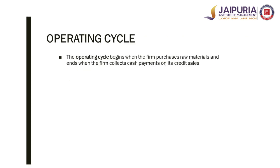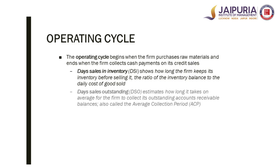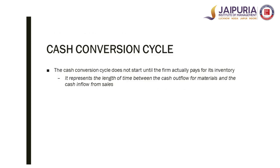Coming on technically, we define the operating cycle using key metrics. Days Sales Inventory (DSI) shows how long the firm keeps its inventory before selling it — it is the ratio of the inventory balance to the daily cost of goods sold. Days Sales Outstanding (DSO) estimates how long it takes on average for the firm to collect its outstanding accounts receivable balances, also called the average collection period. The operating cycle begins when the firm purchases raw materials and ends when the firm collects cash payments on its credit sales.